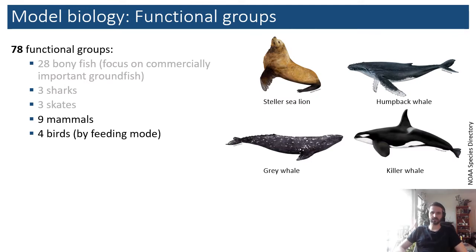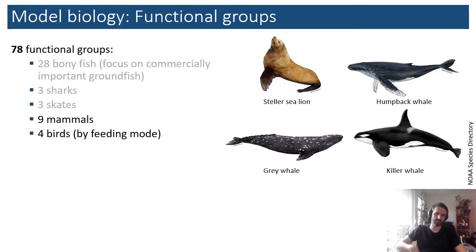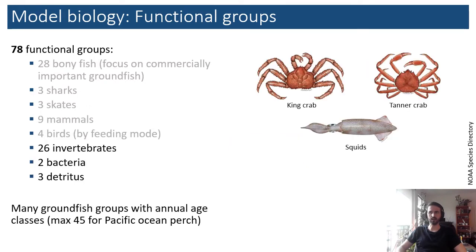For marine mammals we have nine groups total. Where there is conservation interest, we keep them as single-species groups, such as Steller sea lions, humpback whales, and a couple of killer whale groups. We aggregate a bit more for the remaining baleen whales, dolphins, and toothed whales. We have four groups of seabirds, mostly aggregated based on feeding mode. Everything else is at slightly lower resolution: 26 invertebrate groups plus the usual two bacteria and three detritus groups required by Atlantis.